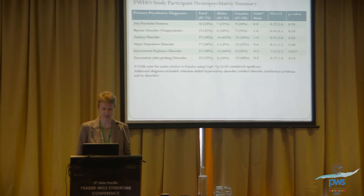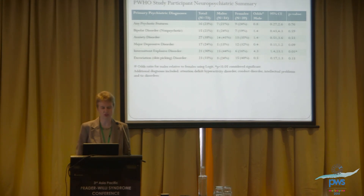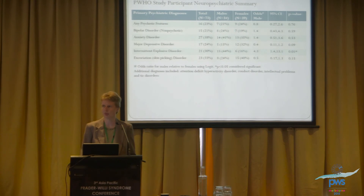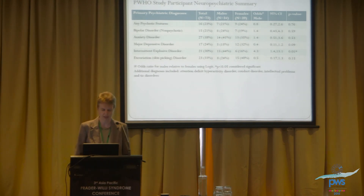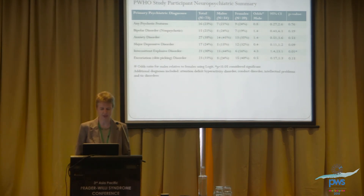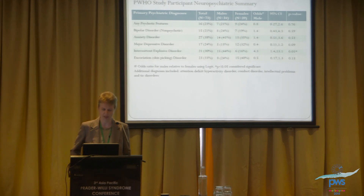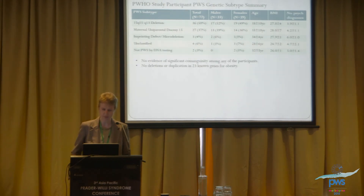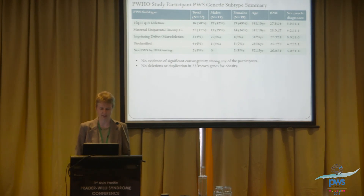There was a trend toward significance for females being more likely to have a depressive disorder — consistent with what we see in the general population. There were also other diagnoses including attention deficit disorder, conduct disorder, and tic disorders, which were not included in the primary analysis. Looking at the genetic subtype distribution: deletion, UPD, and imprinting.